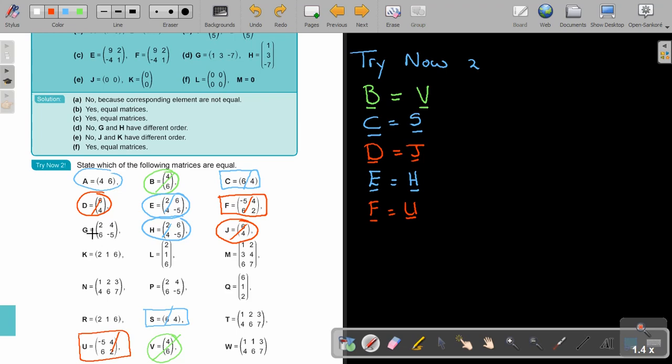So, let's look at number G. Let's see if we find a pair for G. There's G. And if I look, oh, look here. P. So, do you see? Two, four, six, negative five. Order is the same. Elements will also be the same. So, I can say that G is equal to P. Okay.